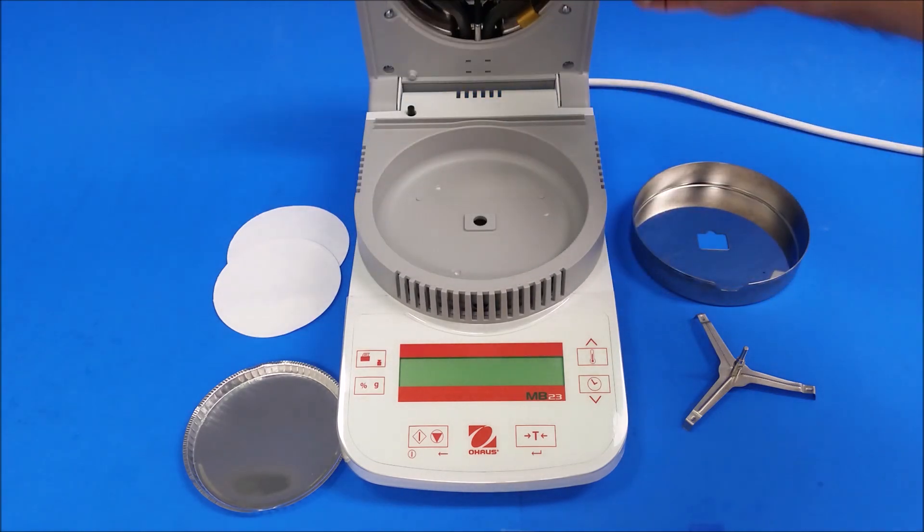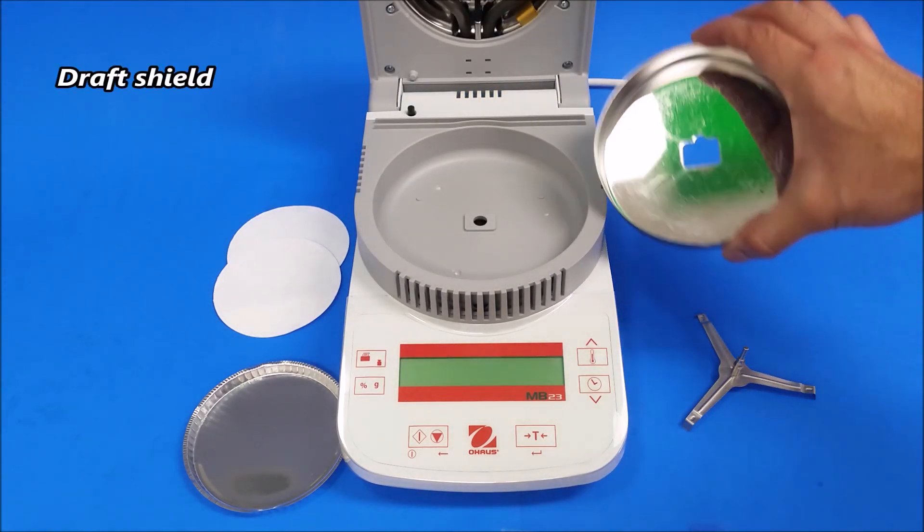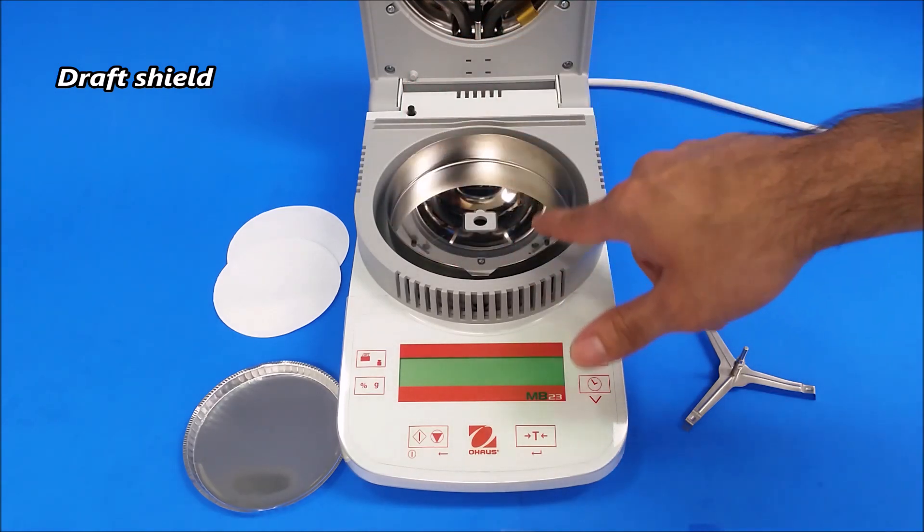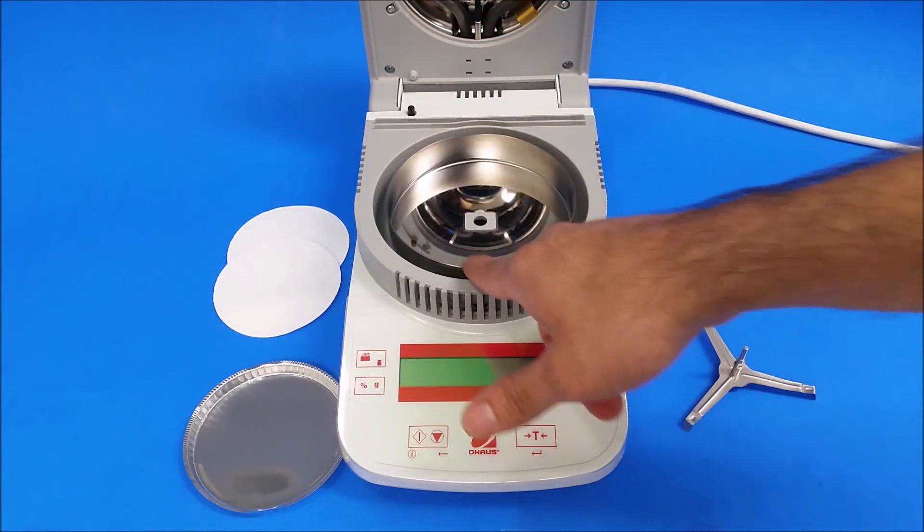First, you're going to place the draft shield. It should fit like a puzzle. You'll see there's this little lip cut here. It should be facing towards you.